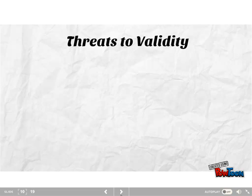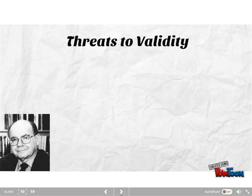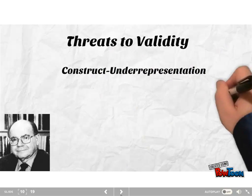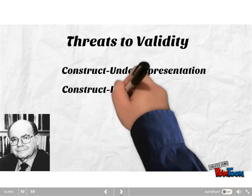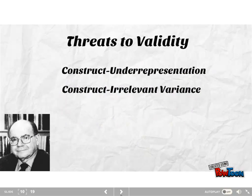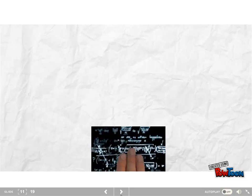Validity is a unitary concept. So according to Sam Messick, there are two threats. First is construct underrepresentation, which indicates that a test is too narrow — in other words, we're missing something. Second is construct-irrelevant variance, where the differences in the scores we see are affected by something that we don't want. It's too broad.